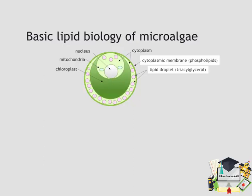Like all cellular organisms, microalgae contain large quantities of lipids in the form of membrane-bound phospholipids that encompass both the thylakoid as well as the cytoplasmic membrane. These are predominantly phospholipids.